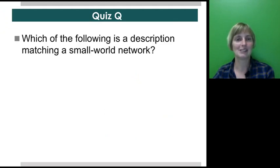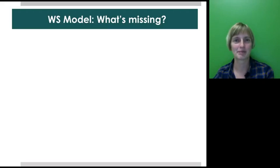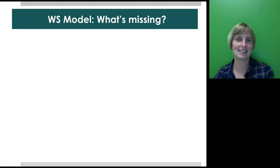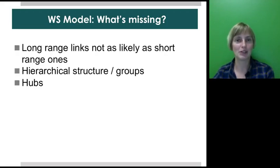Which of the following is a description matching a small world network? Just to make sure we understand what we're talking about. What is missing from the Watts-Strogatz model? It's neat that it could explain clustering coexisting with short paths, but there's much in the real world that it doesn't capture.